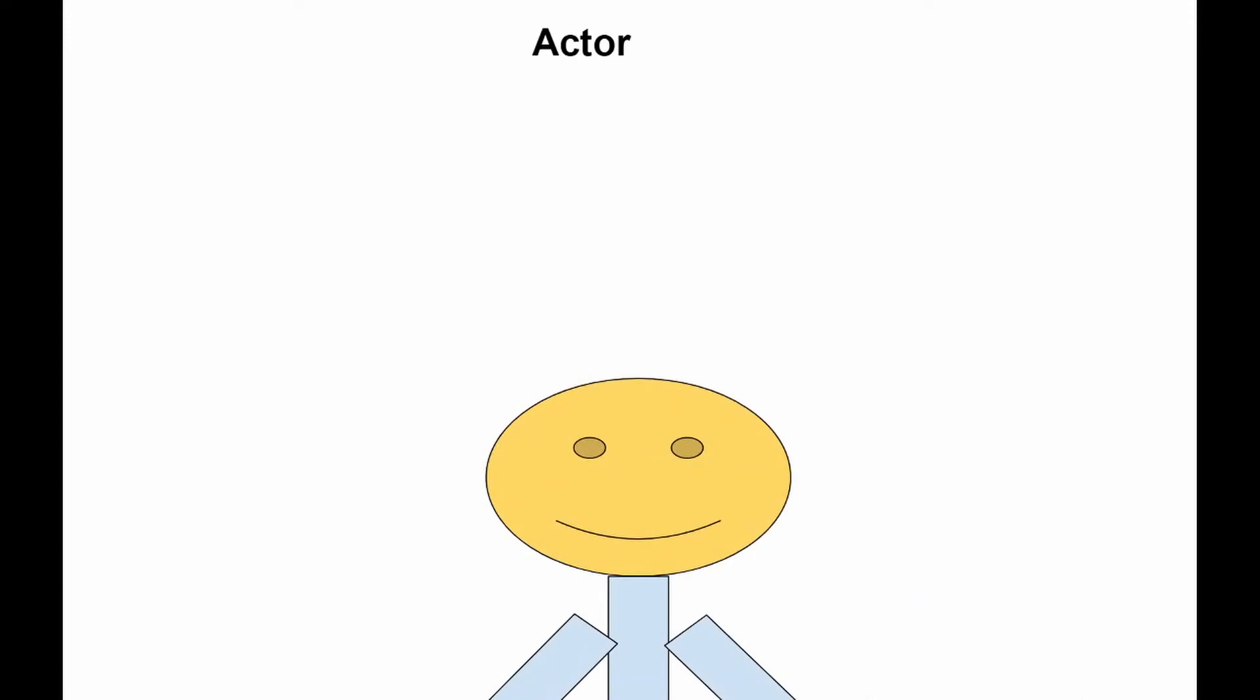For instance, a professor can be a lecturer at the university, as well as a scientist in some kind of research lab. So in this case, the professor plays two roles in two different systems.